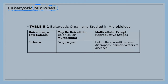Some eukaryotic microorganisms are unicellular, like protozoa. Unicellular means one cell becomes one organism, and that cell is able to perform all characteristics of life, like reproduction, metabolism, and responding to stimuli.